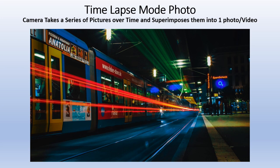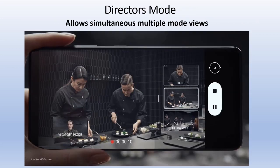Director's Mode is where you look through the camera viewfinder and it shows you the other available modes as options — such as telephoto, wide angle, ultra-wide view, or time lapse — and you can choose which one to use. This doesn't come standard on most cameras, but it is available and is a nice feature.